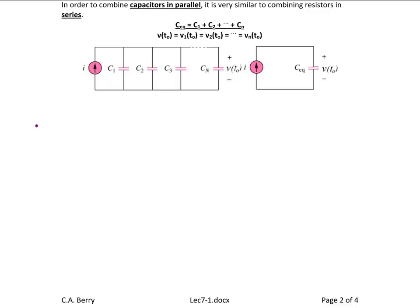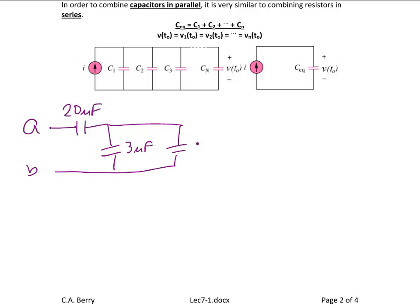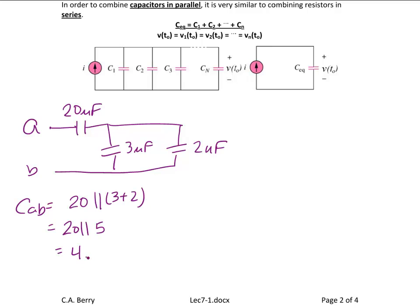Let's do an example. At terminals A and B, we have a 20 µF capacitor in series with a 3 µF capacitor in parallel with a 2 µF capacitor. We want to find the equivalent capacitance between terminals A and B. We have 20 in series with the parallel combination of 3 and 2 — using the notation for parallel and series because capacitors combine opposite to resistors. This becomes 20 in series with 5, or 4 µF. Now for initial conditions, the initial voltage across the 20 µF capacitor is 2 volts, and the initial voltage across the 3 µF and 2 µF capacitors is 3 volts.